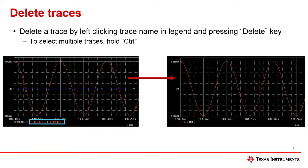Left-click on the trace name in the legend, then select the Delete key in order to delete unwanted traces from your plot. If you would like to delete multiple traces, hold Ctrl while selecting traces.